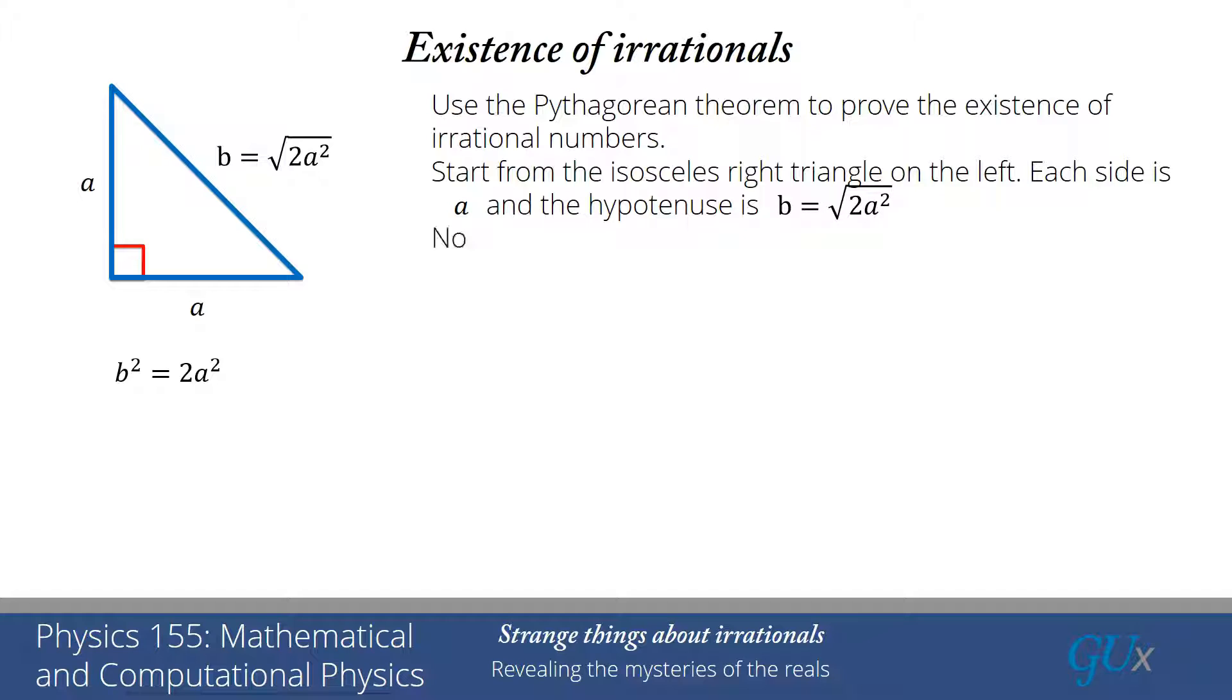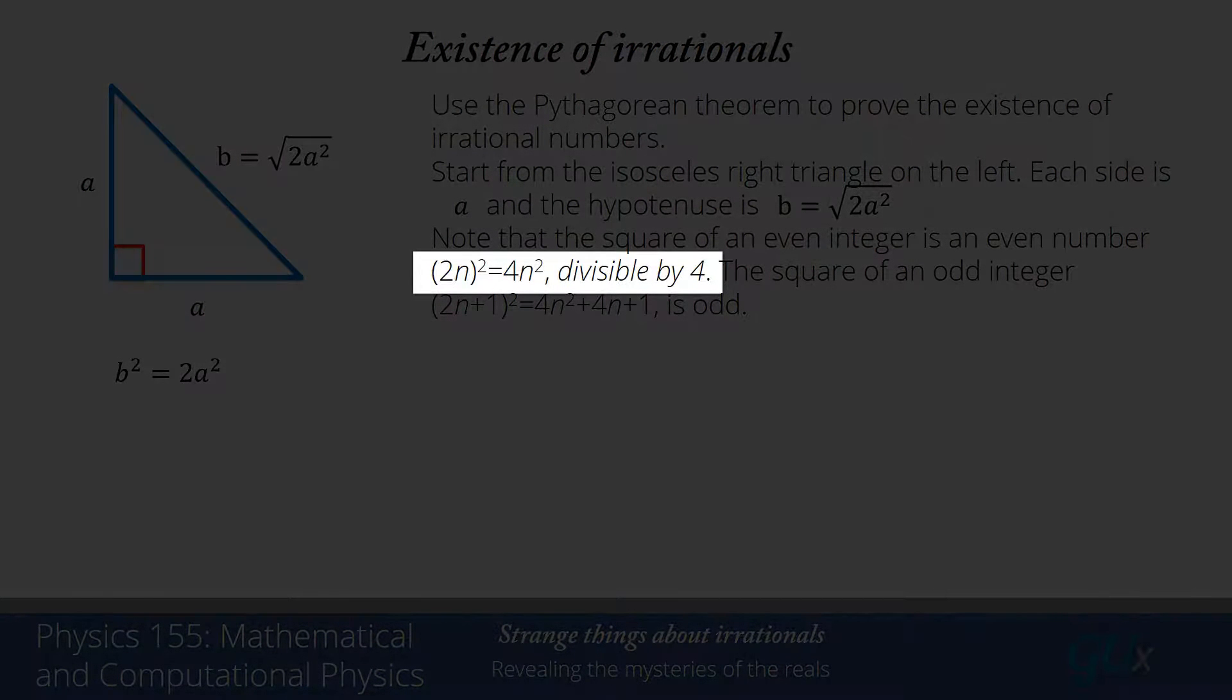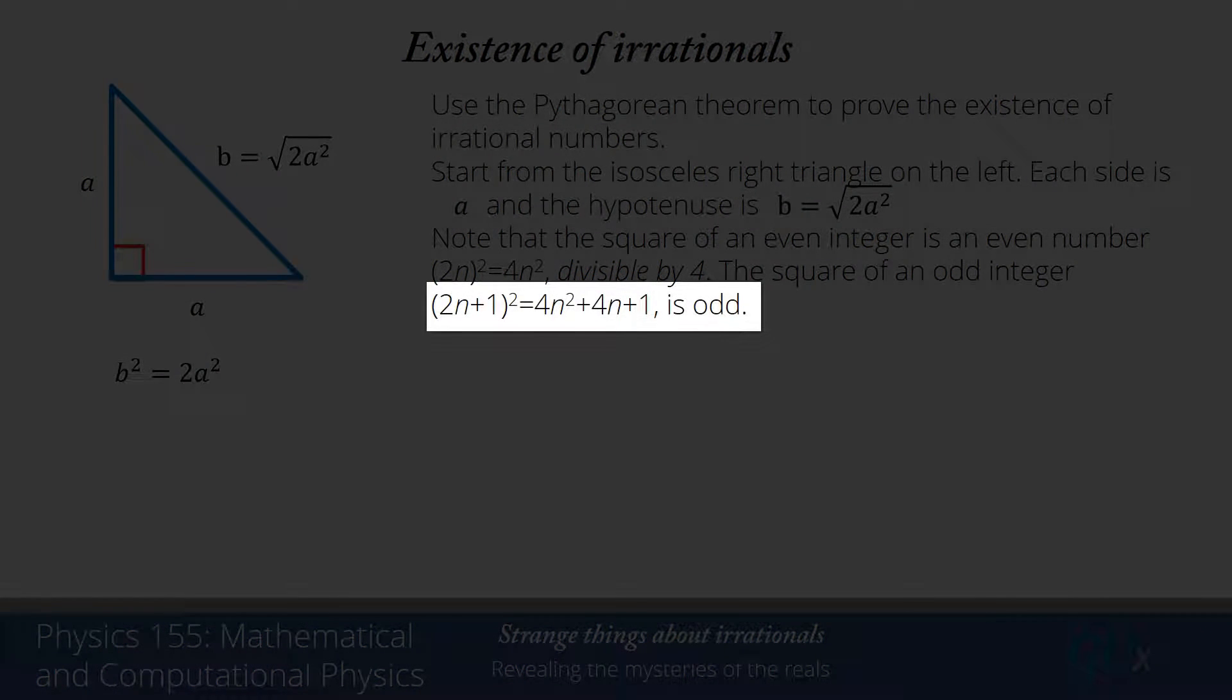We're now going to make two observations about the squares of integers. The first one is if we have an even integer and we square it, so if I take 2n and square it, I will get 4n squared. That means the square of an even integer is divisible by 4. On the other hand, if I take the square of an odd integer, 2n plus 1 squared, I get 4n squared plus 4n plus 1. Well, 4n squared is always even, 4 times n is always even, but 1 is odd, so when I add all of those together, I get an odd number. So the square of an odd integer is always odd.